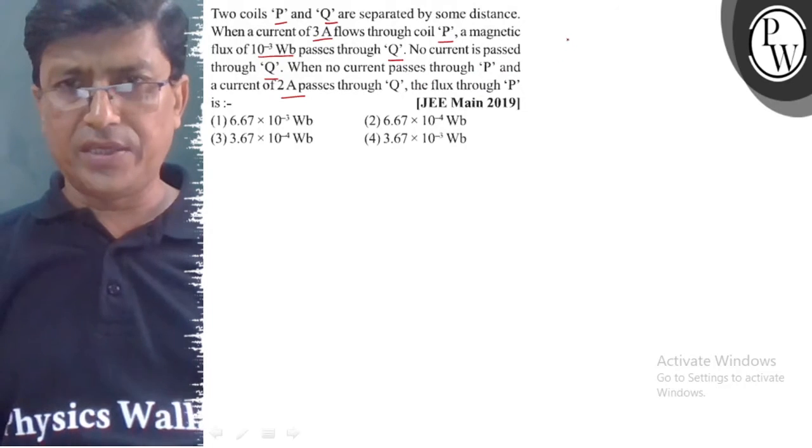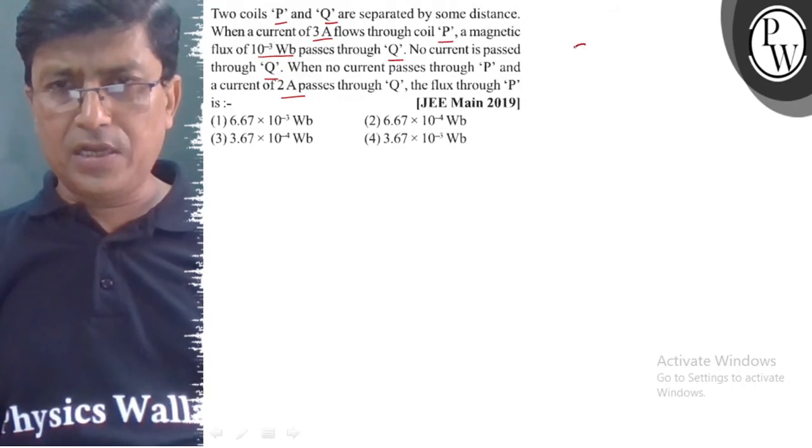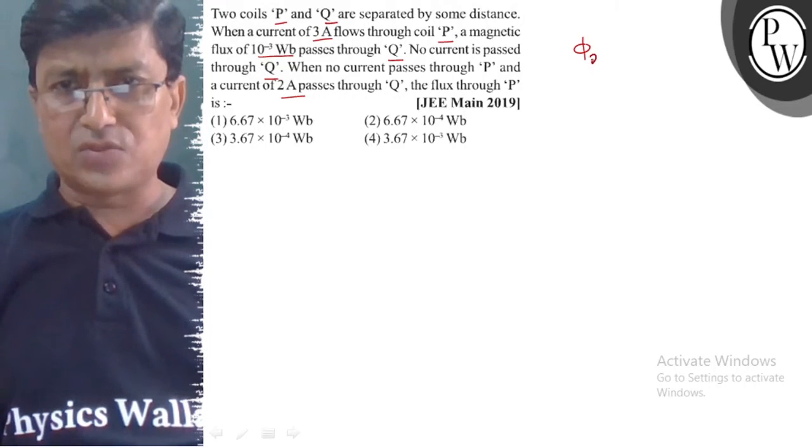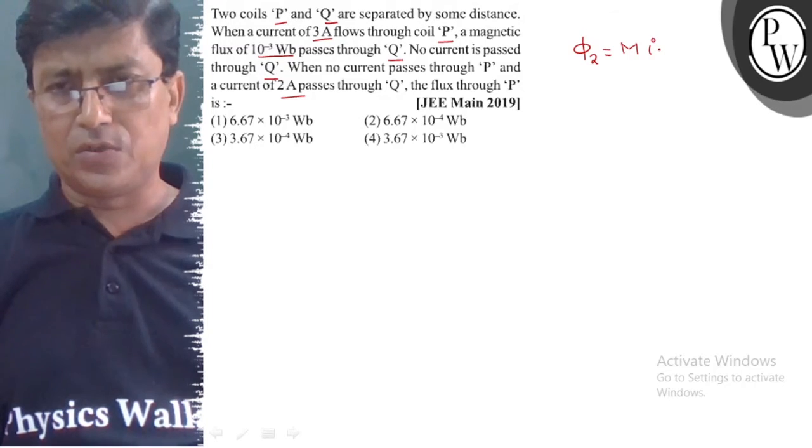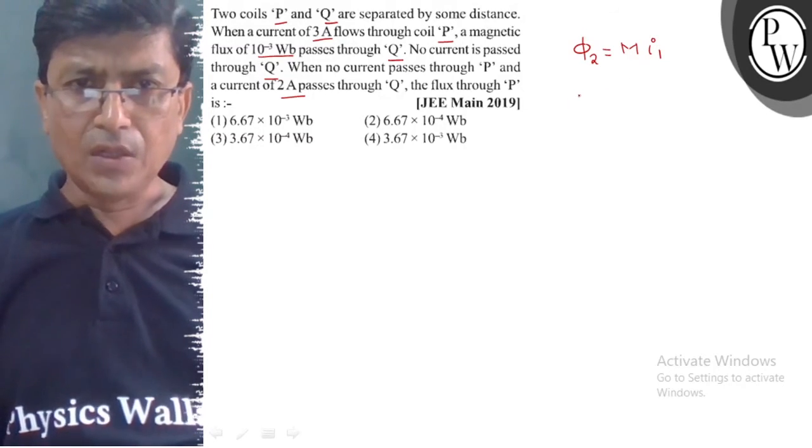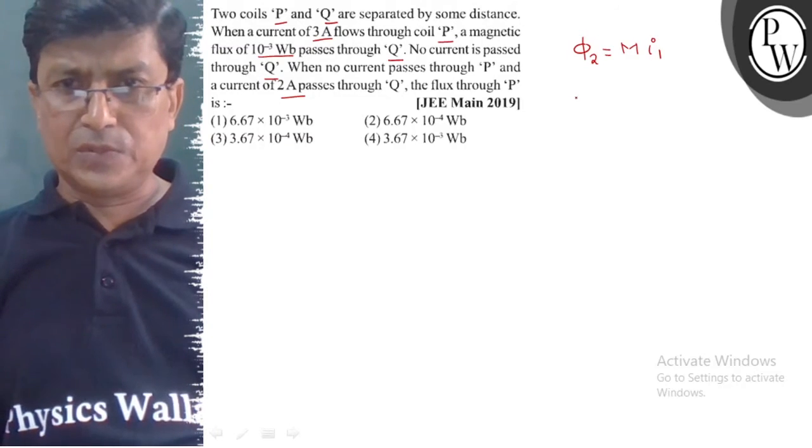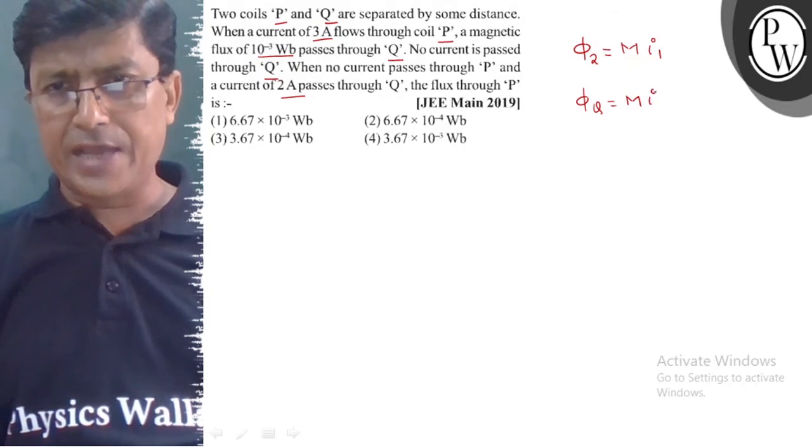Now, we know that if we have two coils, if we have secondary coils to pass through flux, then M times current in primary coil. So if we have two coils here, then φQ equals M times IP, this is equation number 1.